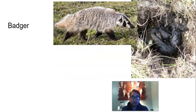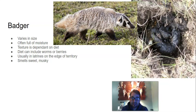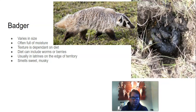One of the organisms that might be frequenting your area is a badger. Badger scat varies in size. It's oftentimes full of moisture. Its texture is dependent upon its diet, which does include things like worms and berries, depending upon the time of the year. Oftentimes, the indicator of badger scat is that they will dig a latrine and deposit their waste in it. You can see in this image where a hole was dug and then the organism deposited its scat there.